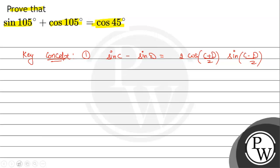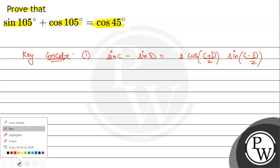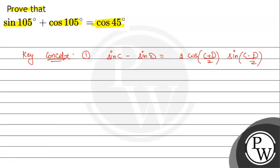Now, using this key concept we will solve the equation. The given statement is sin 105 degree plus cos 105 degree, it is equal to cos 45 degree.